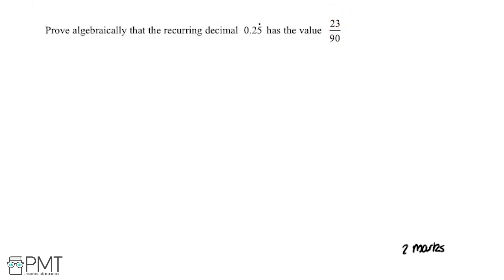Whenever you get a question like this, the first step is to set this number, the recurring decimal, to a variable. We're going to use the variable x and say x equals 0.25 recurring.